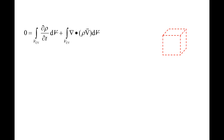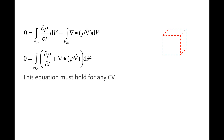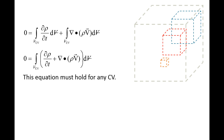If we substitute rho times the velocity vector V for g, the left side of the divergence theorem is the same as the second term in the conservation of mass equation. So we can replace the surface integral with a volume integral. Since both terms are now volume integrals over the same region of space, we can combine them into a single integral. The integrand is the quantity partial rho partial t plus the divergence of rho times the velocity vector V. This integral equals zero for any control volume, whether it encompasses a region outside, inside, or larger than the original control volume.